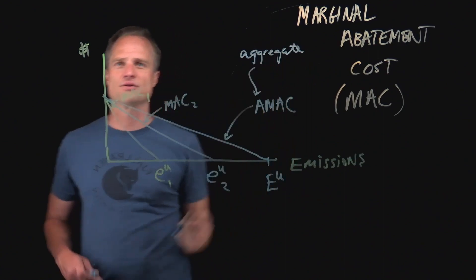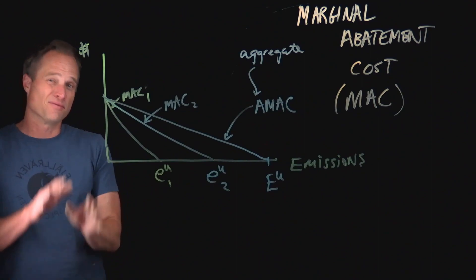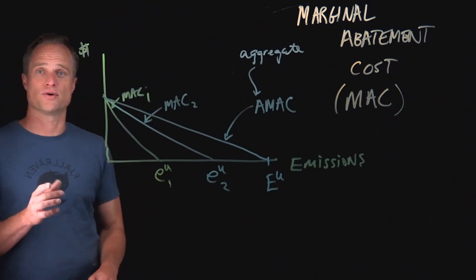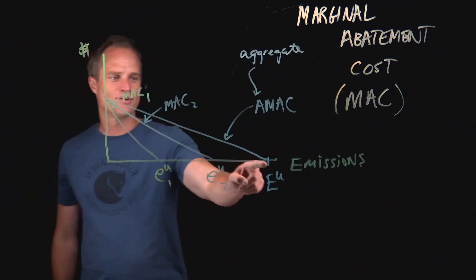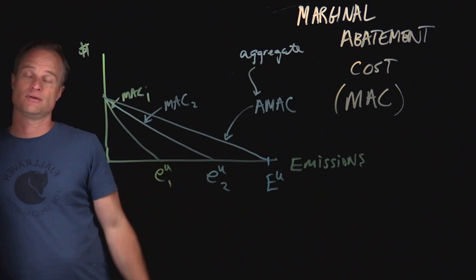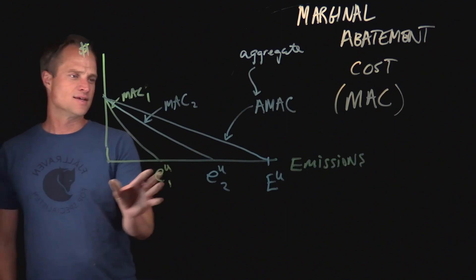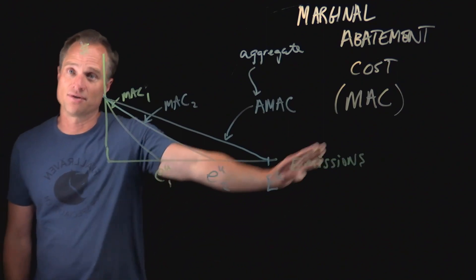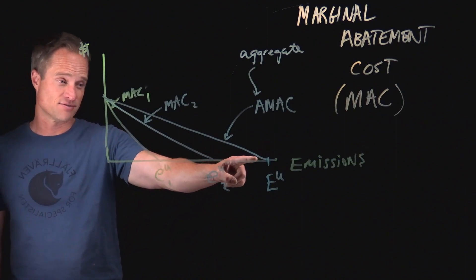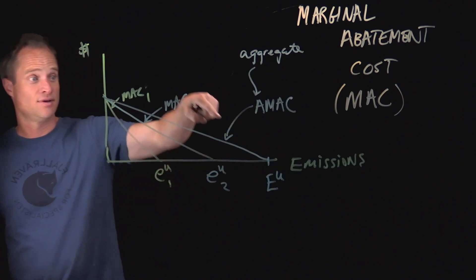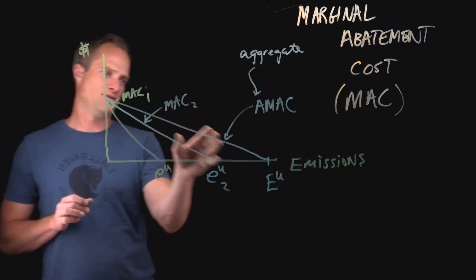AMAC stands for Aggregate Marginal Abatement Cost. When we're thinking about individual firms we use lowercase e, but often — especially for climate change discussions — we're looking at aggregate levels, global or regional. That's what the McKinsey graph represented: all sectors and all industries aggregated, which is an AMAC. The more firms you have, the bigger the emissions number. As things become cheaper, the curve becomes flatter; if things become more expensive, it becomes steeper. It's good to get the intuition of both individual marginal abatement costs and AMAC.